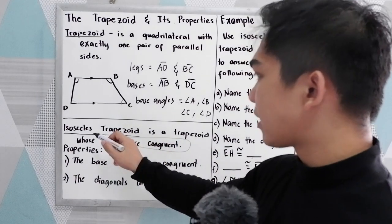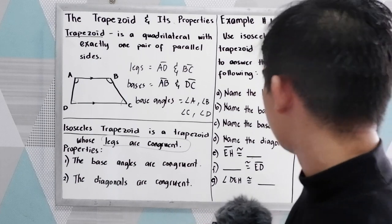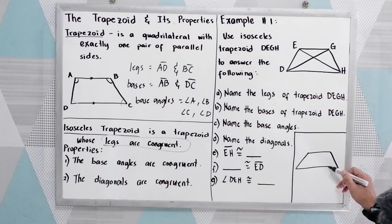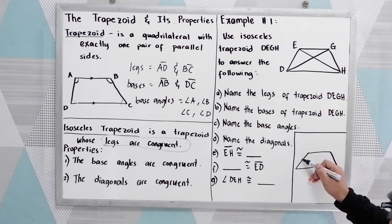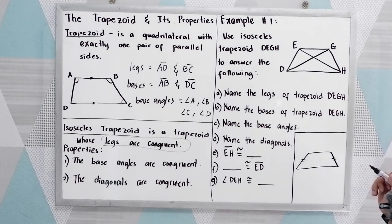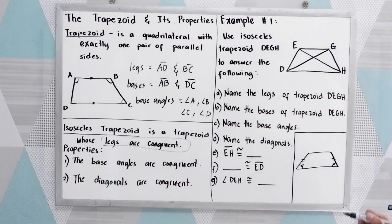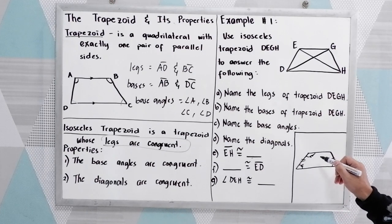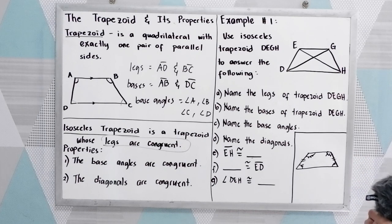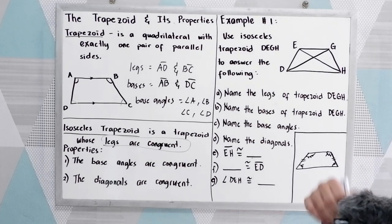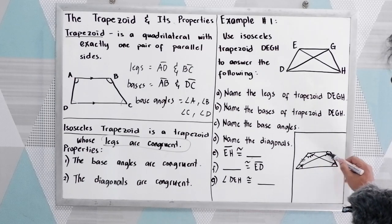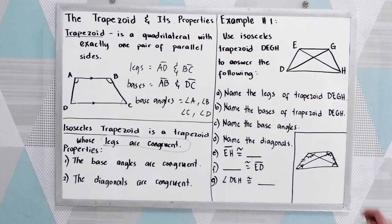If we're going to draw our isosceles trapezoid, our legs are congruent. The base angles are equal — this angle is equal to the other base angle, and this angle is also equal to this angle. That is the isosceles trapezoid. And if we're going to draw the diagonals, they are also congruent.